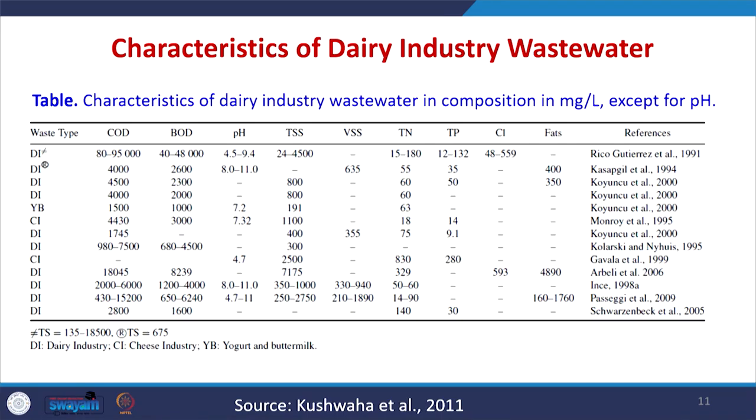Sanitary wastewater is similar in composition to municipal wastewater and is generally piped directly to sewage works or a CETP if available. It can also be used as a nitrogen source for unbalanced dairy effluents before a secondary aerobic treatment. These are the different types and characteristics of wastewater generated in the dairy industry.